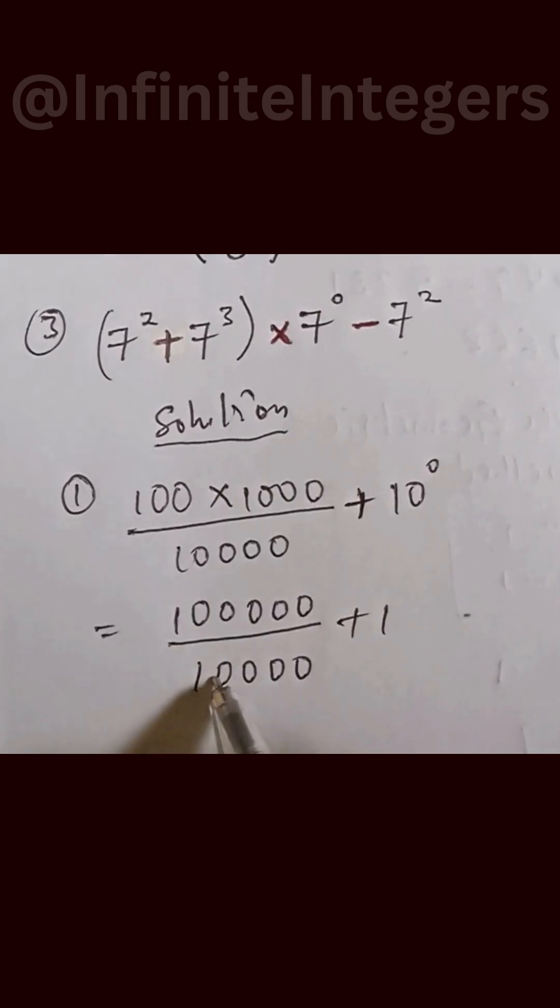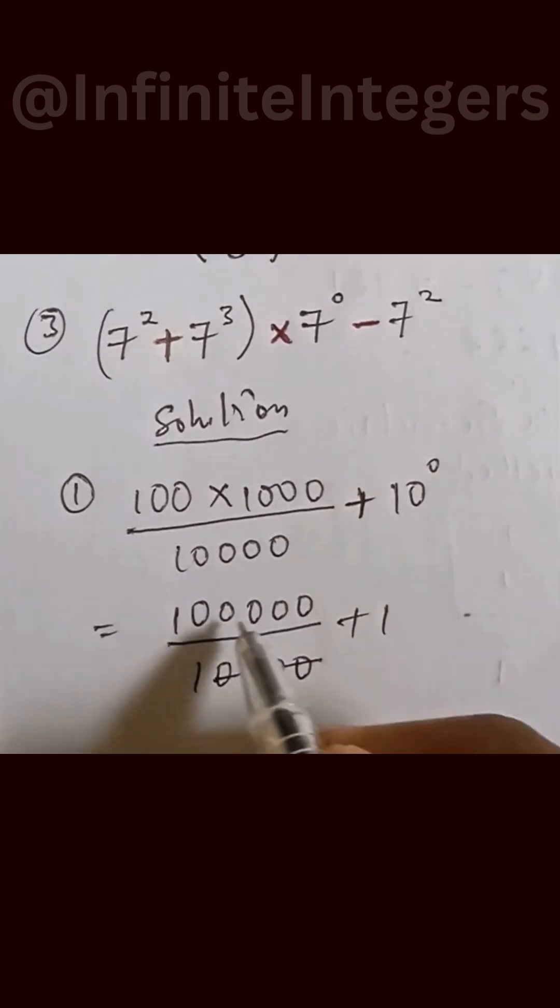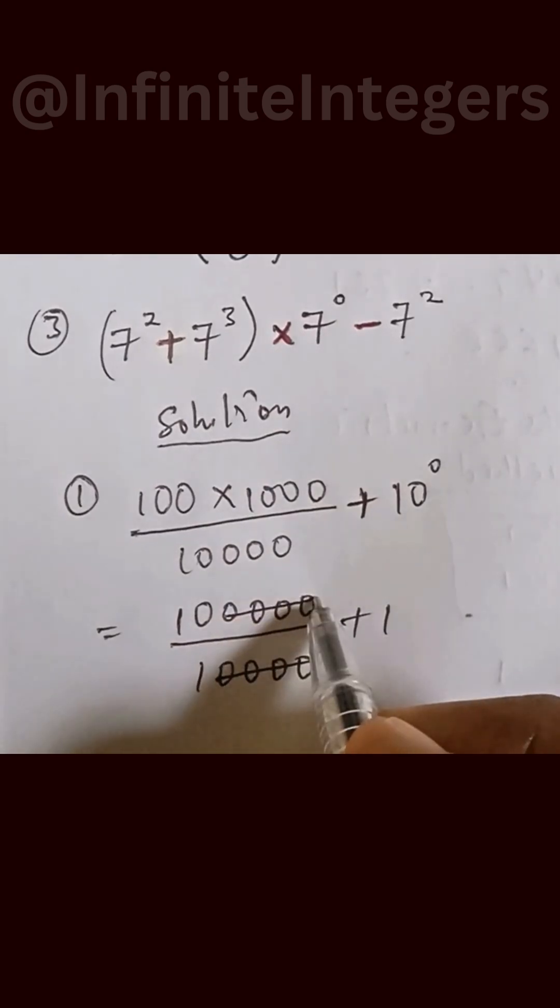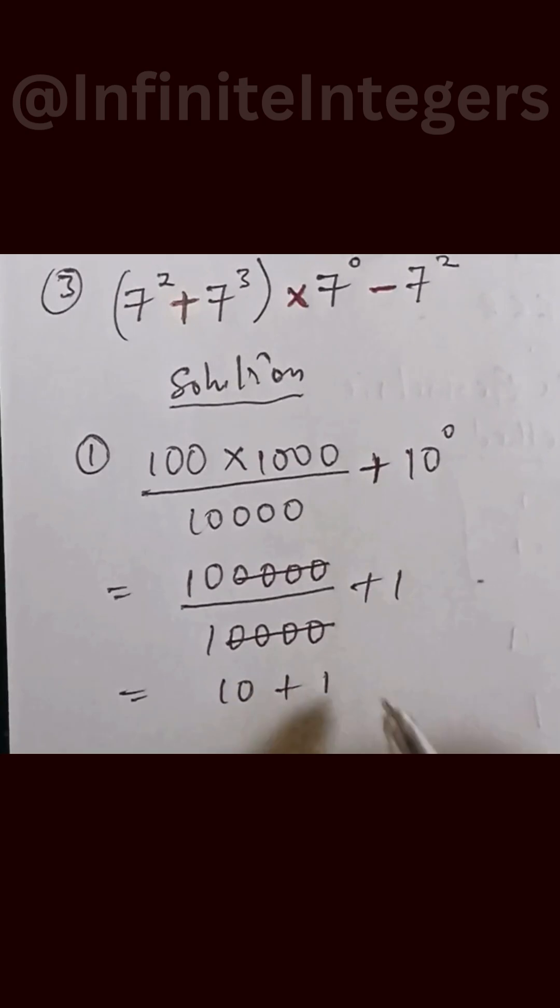So the whole of these zeros we cancel out with four of this. We are left with 10, and that will be added with one. We should be given as 11.